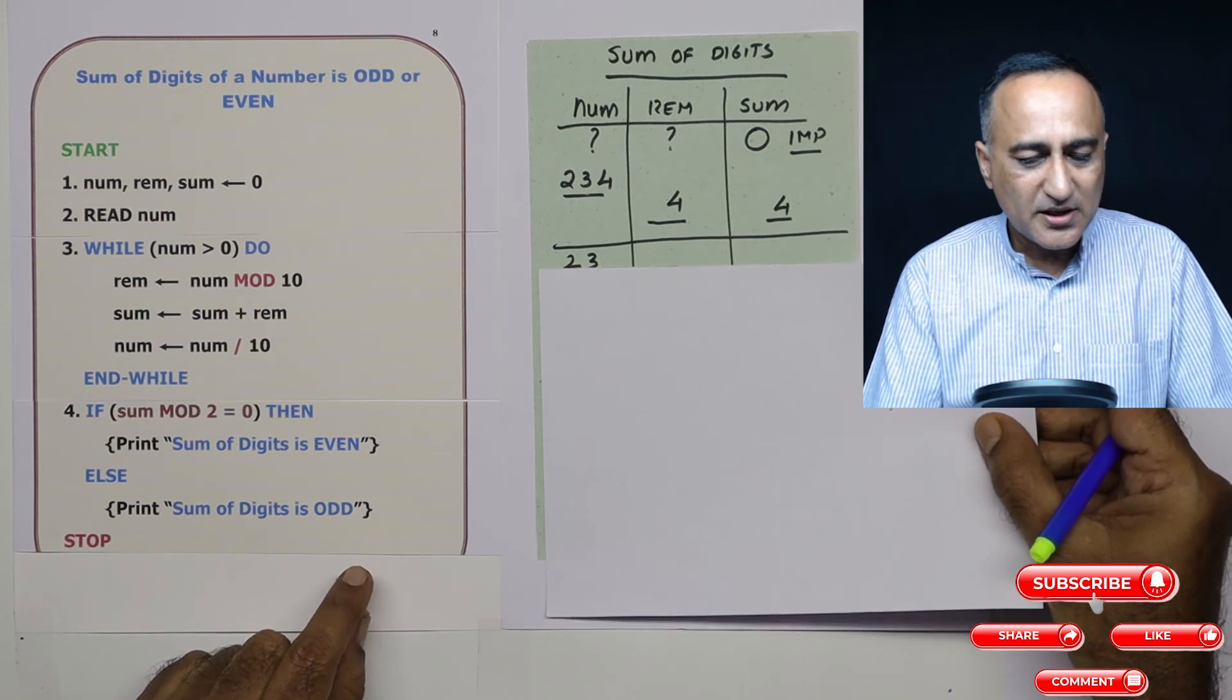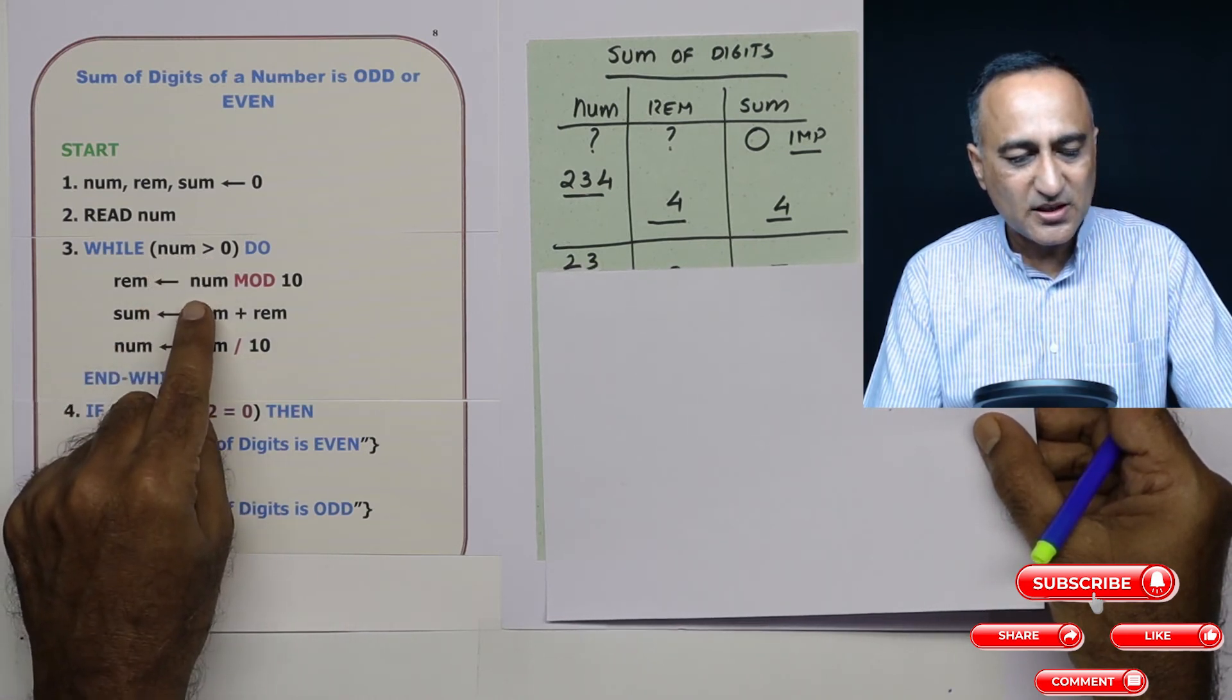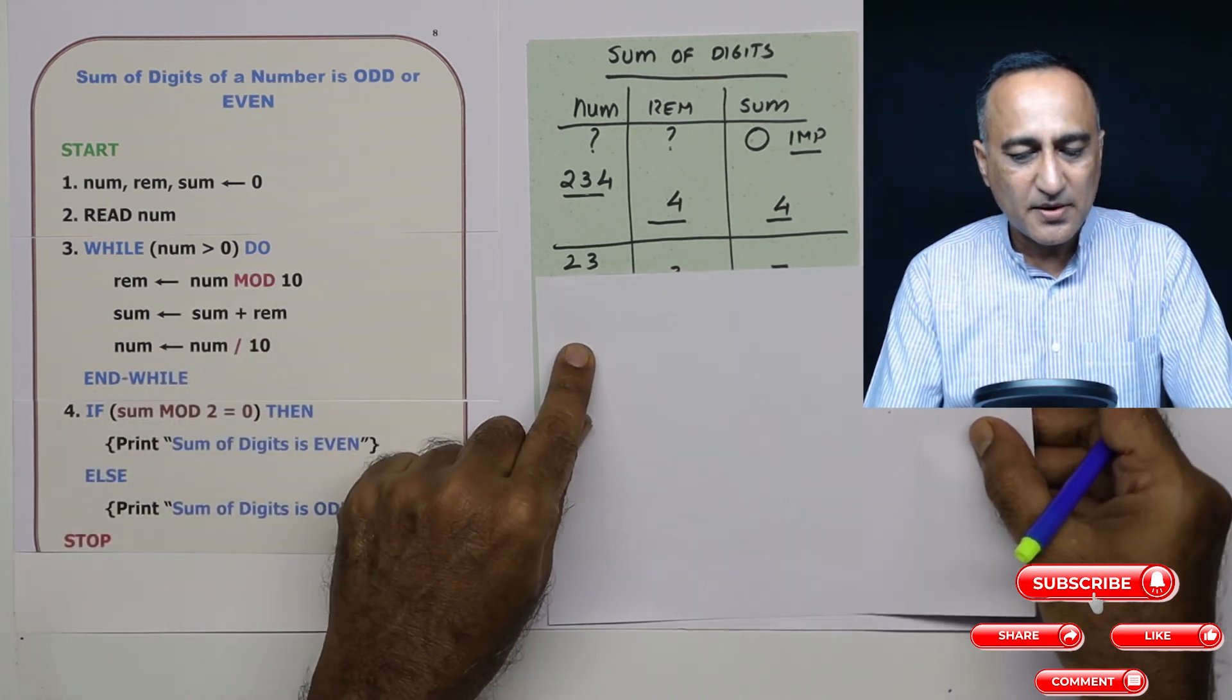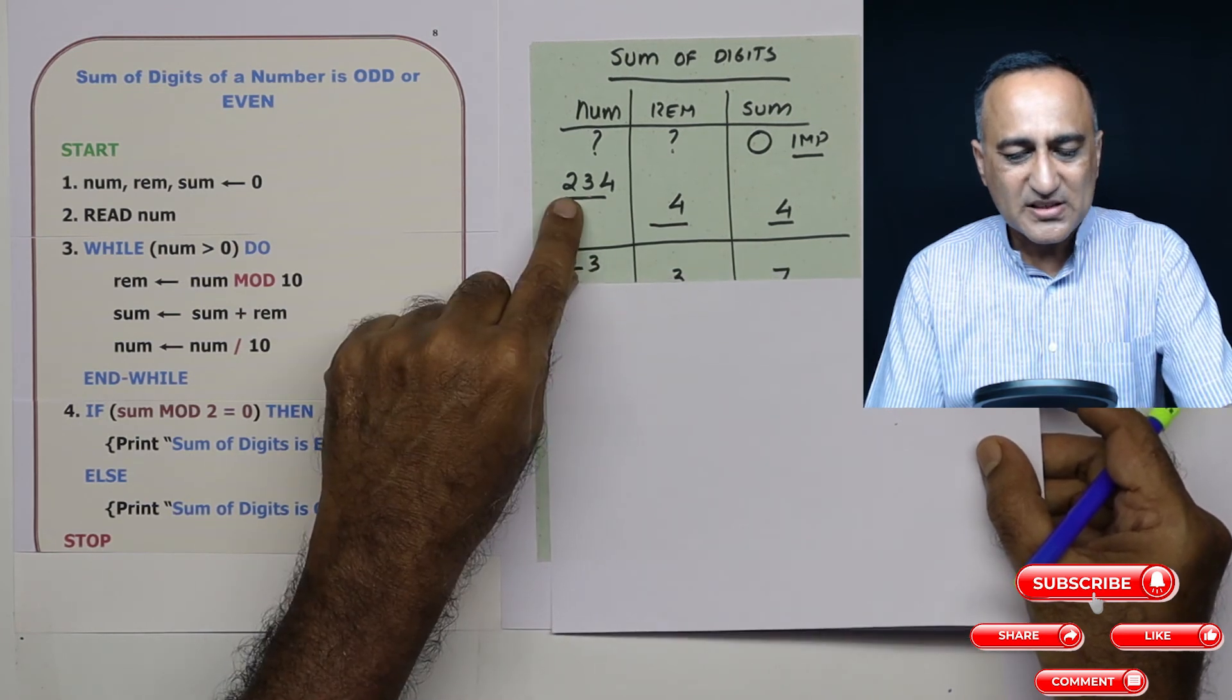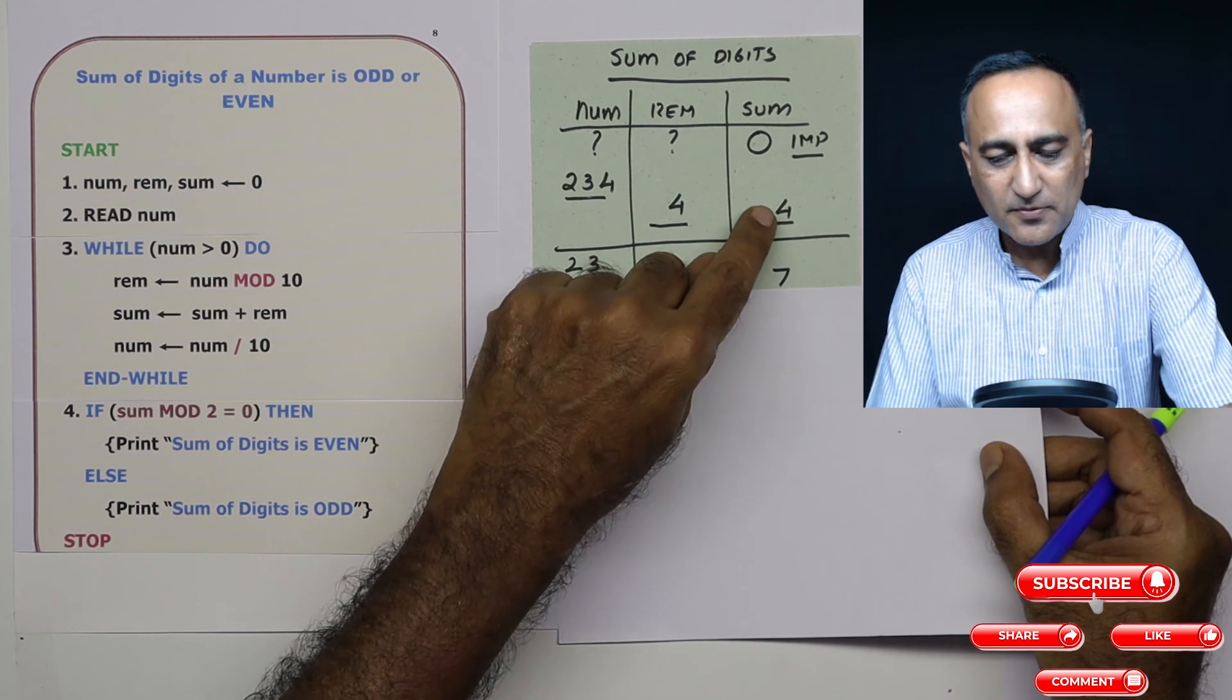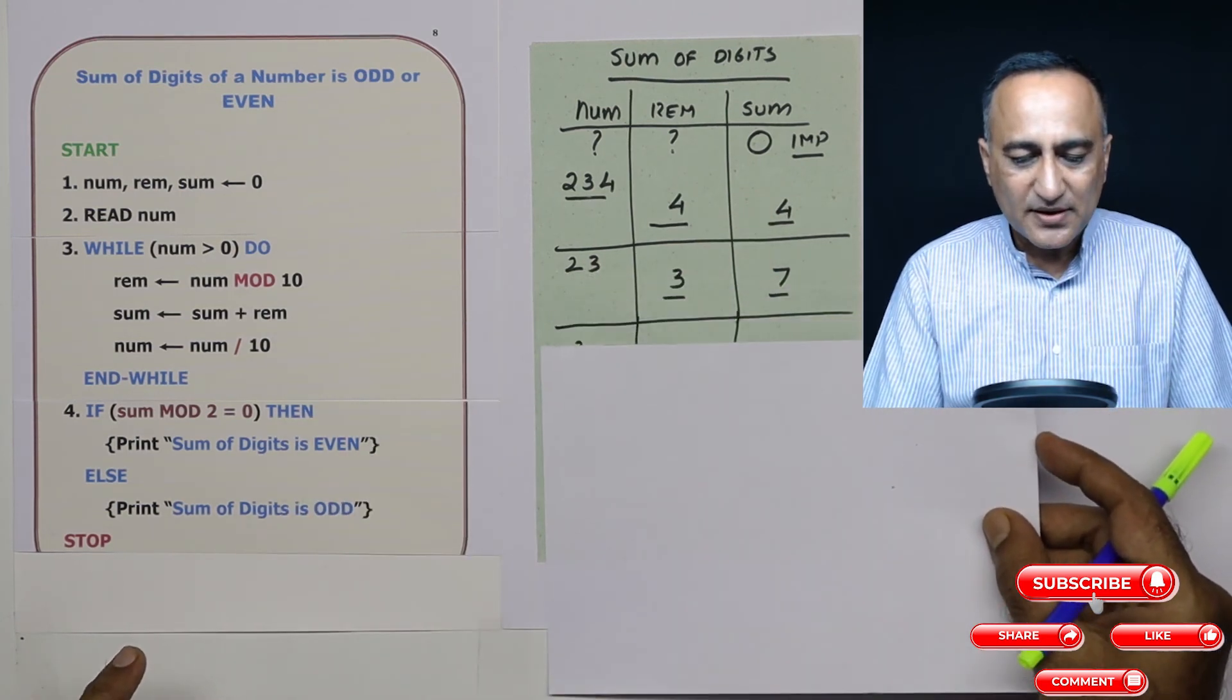Now when 23 remains, I am going to come here. Is 23 greater than zero? It is still true. Remainder is 23 mod 10, so it will just give me a remainder of three. Once I get three, I am going to add this remainder to the old value of sum. Four plus three happens to be seven.